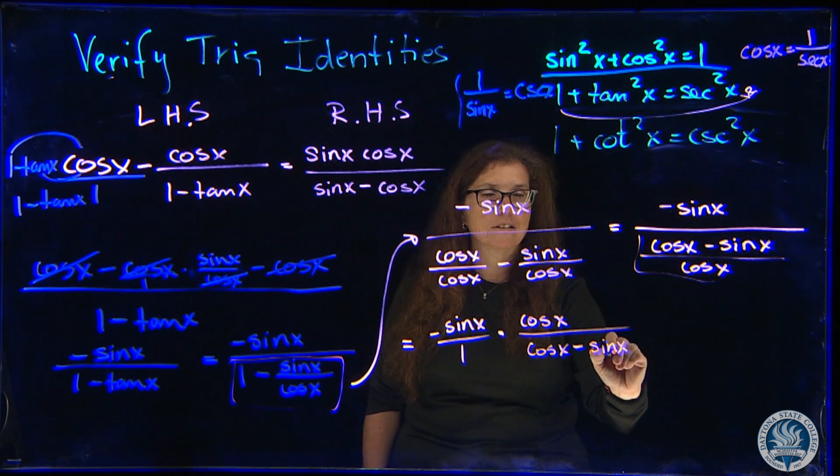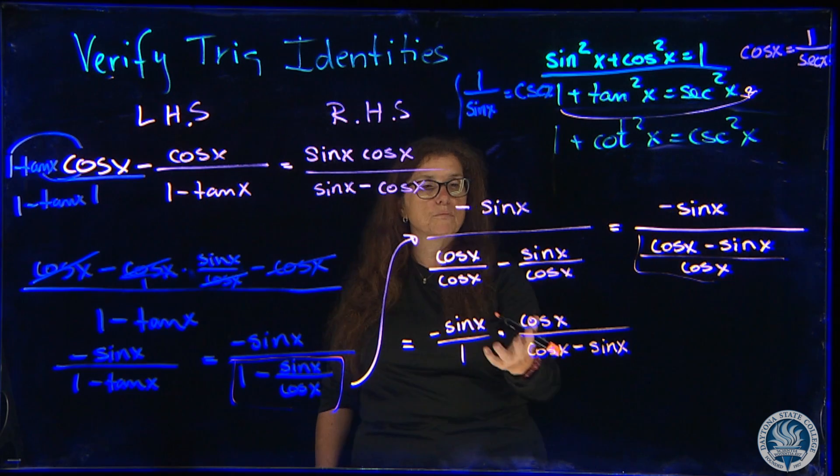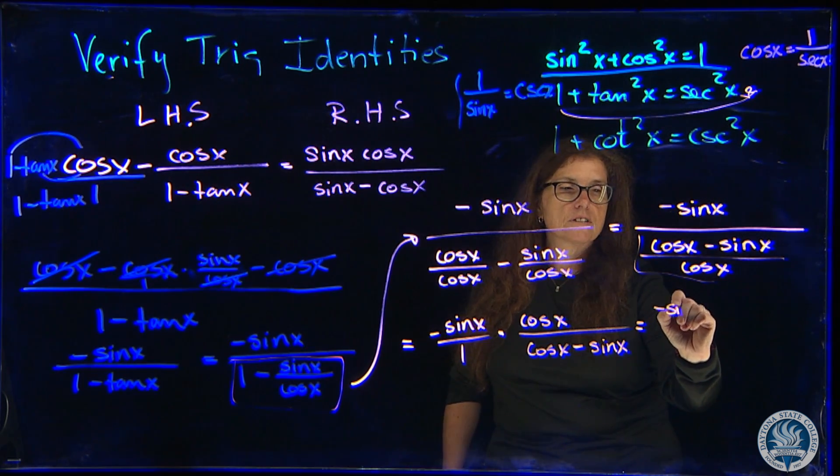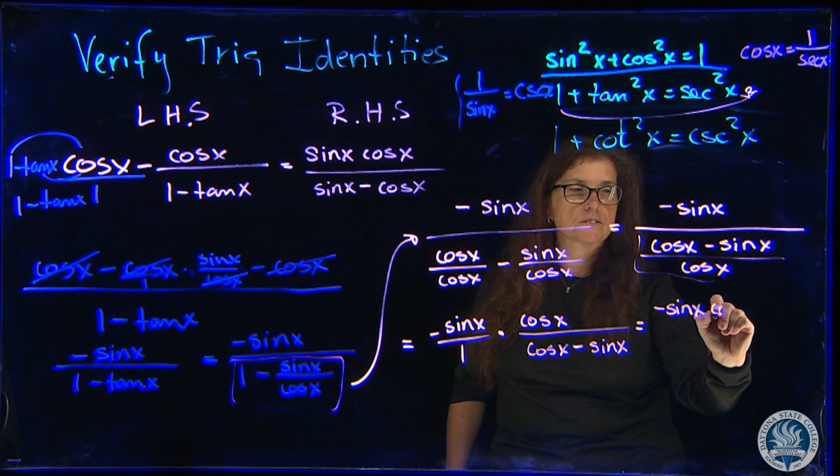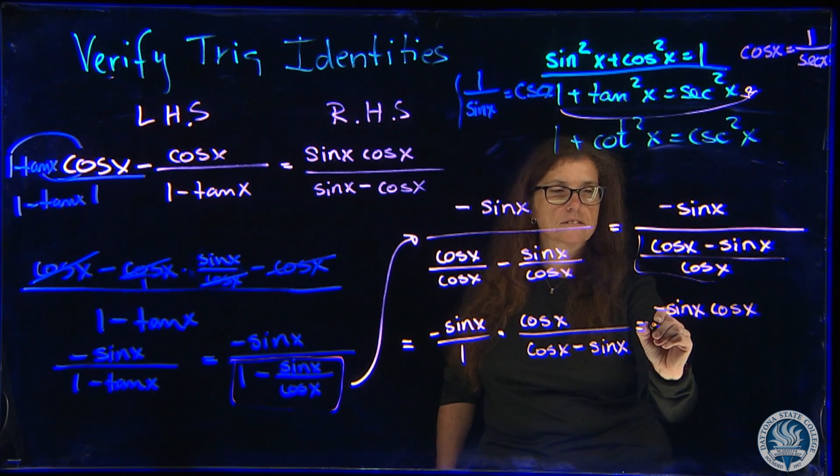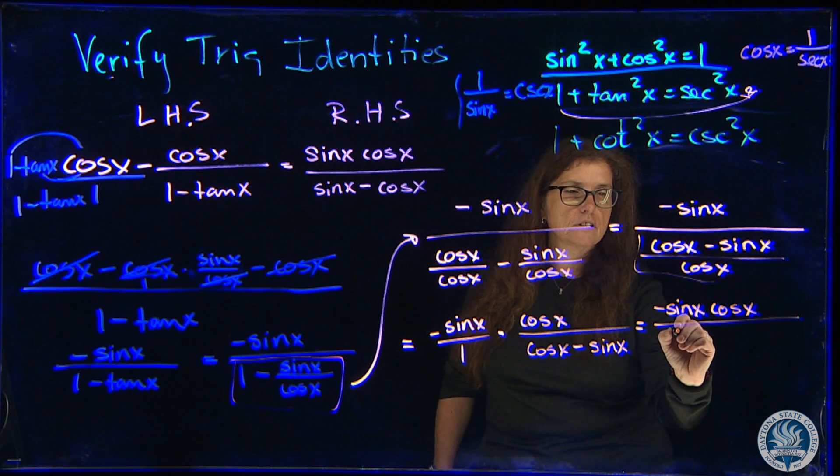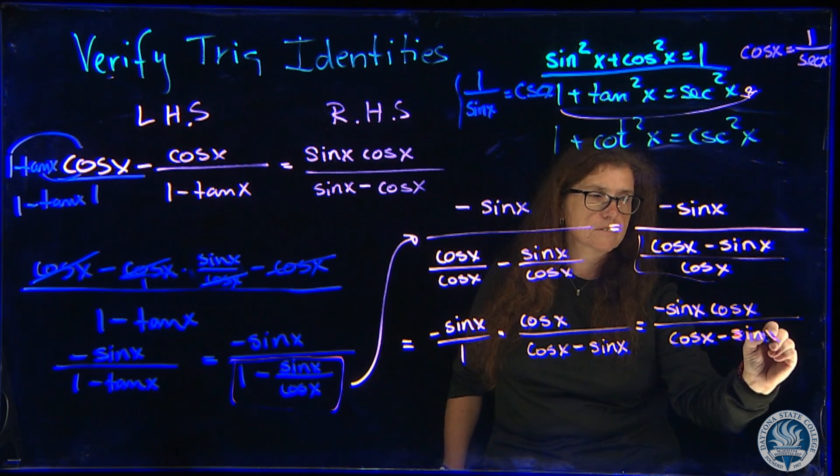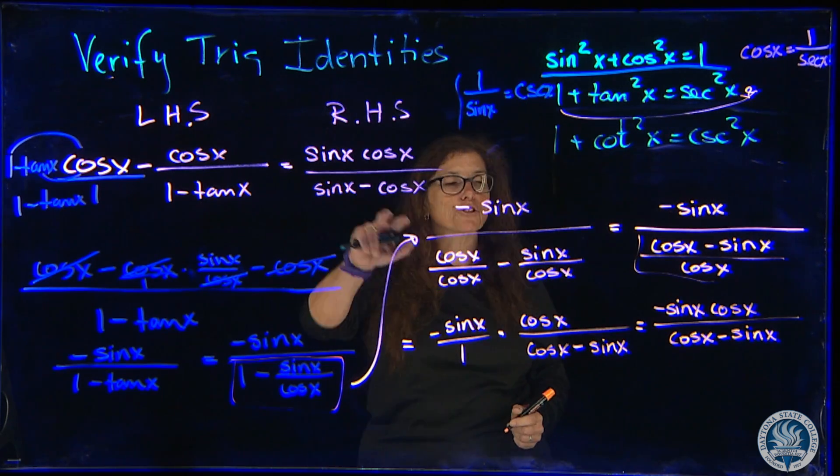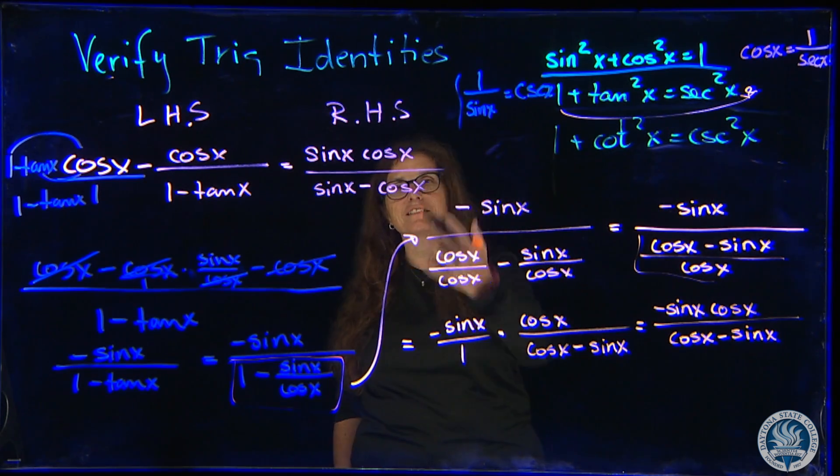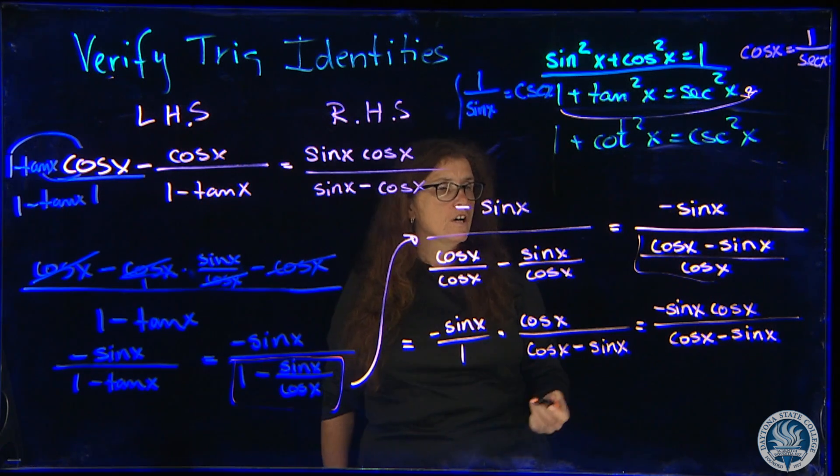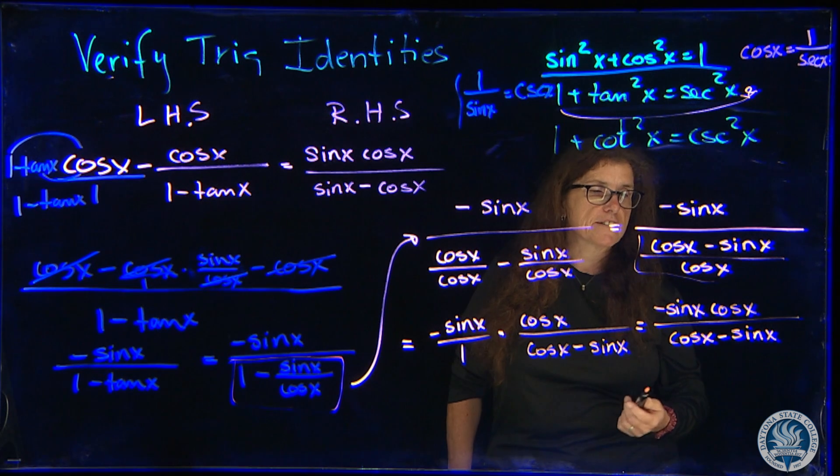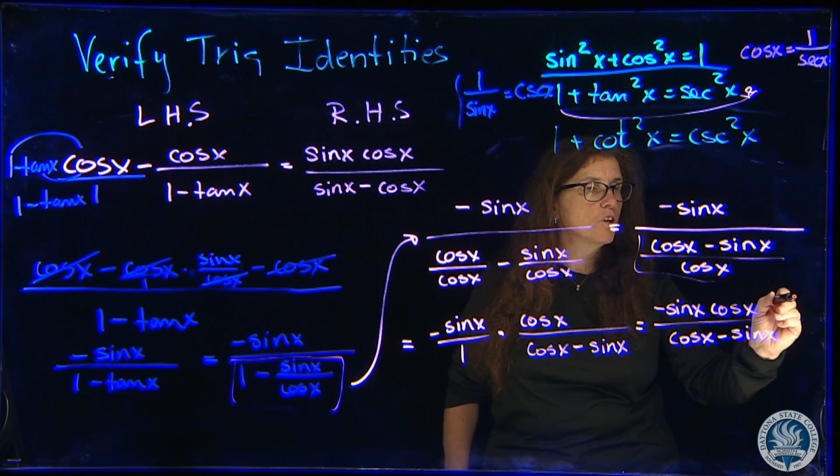Oh, we're almost there. If you multiply, you get negative sine of x cosine x over cosine x minus sine x. That's not quite what my right-hand side is. My right-hand side is positive. So what we're doing is multiplying both sides by negative 1, numerator and denominator, which I'm allowed to do.